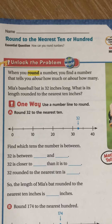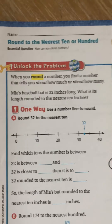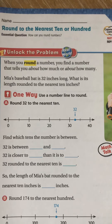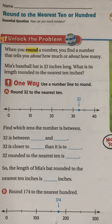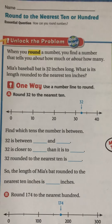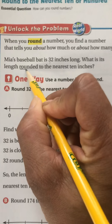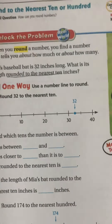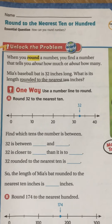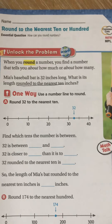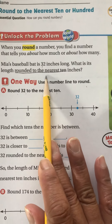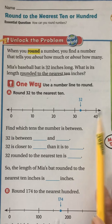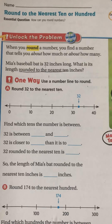It says when you round a number, you find a number that tells you about how much or about how many. Mia's baseball bat is 32 inches long. What is its length rounded to the nearest 10 inches? So here's our two digit number 32, and the question is what is its length rounded to the nearest 10? So with your pencil, please underline — we are trying to find what this number is to the nearest 10. Here's one way that you can find out. It says one way: use a number line to round. Round 32 to the nearest 10.